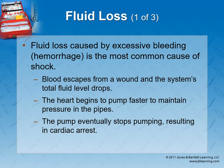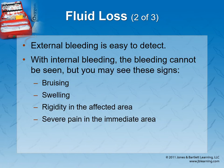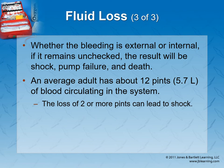With fluid loss you can have bleeding, diarrhea, vomiting, and dehydration. Blood loss is the most obvious. Internal bleeding can cause bruising, swelling, rigidity, and severe pain. You can also have external bleeding. The average adult has about 5.7 liters of blood, and a loss of two or more liters can lead to shock. There's not a lot of flexibility — once we go down a liter or two, we're in shock.